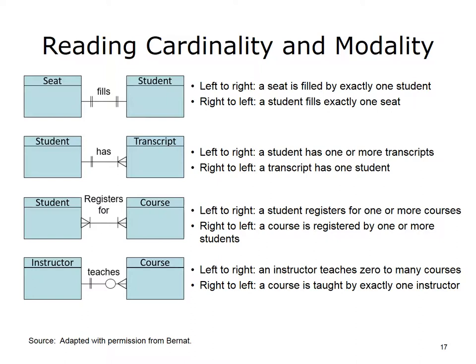The seat-filled-student example: left-to-right, a seat is filled by exactly one student; right-to-left, a student fills exactly one seat. The student-has-transcript example: left-to-right, a student has one or more transcripts; right-to-left, a transcript has one student. The student-registers-for-course example: left-to-right, a student registers for one or more courses; right-to-left, a course is registered by one or more students. The instructor-teaches-course example: left-to-right, an instructor teaches zero to many courses; right-to-left, a course is taught by exactly one instructor.